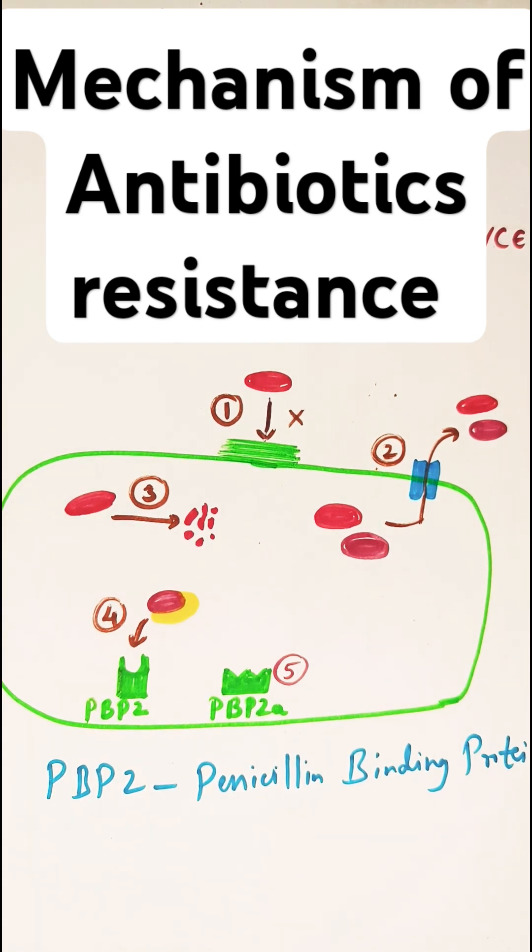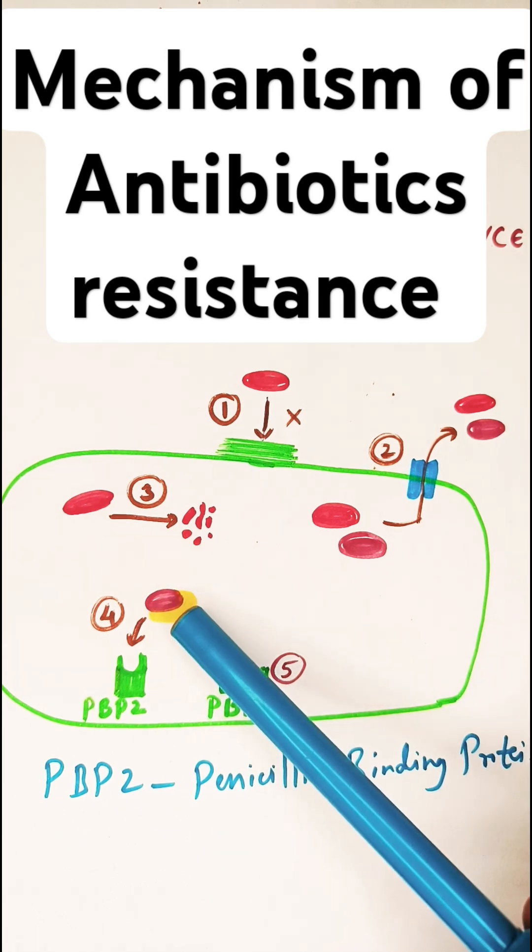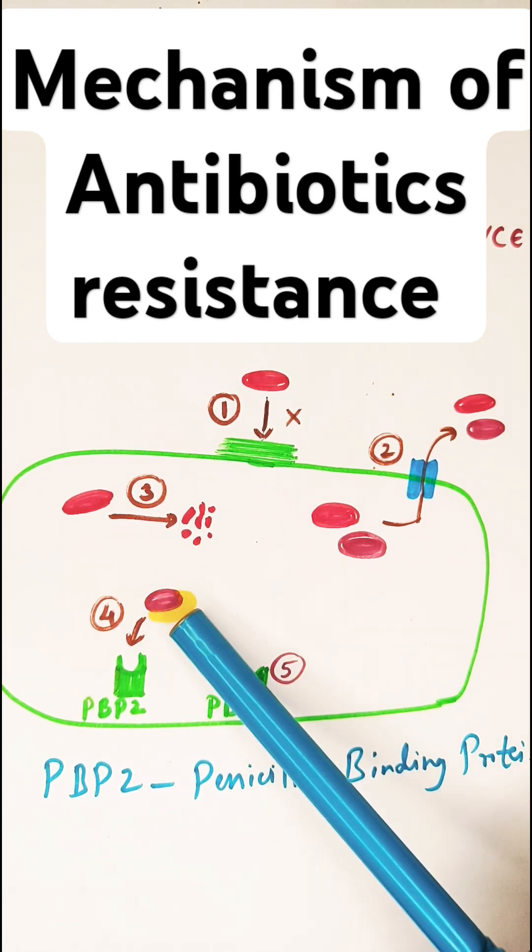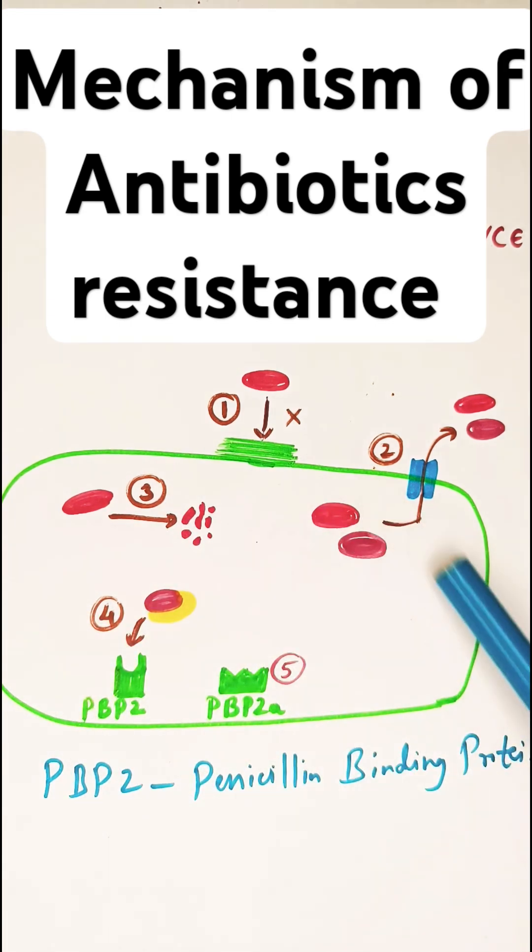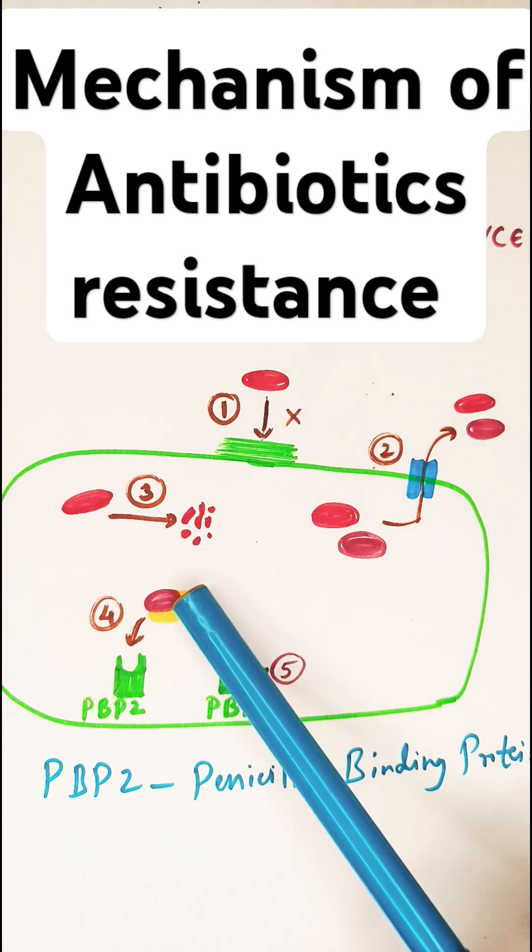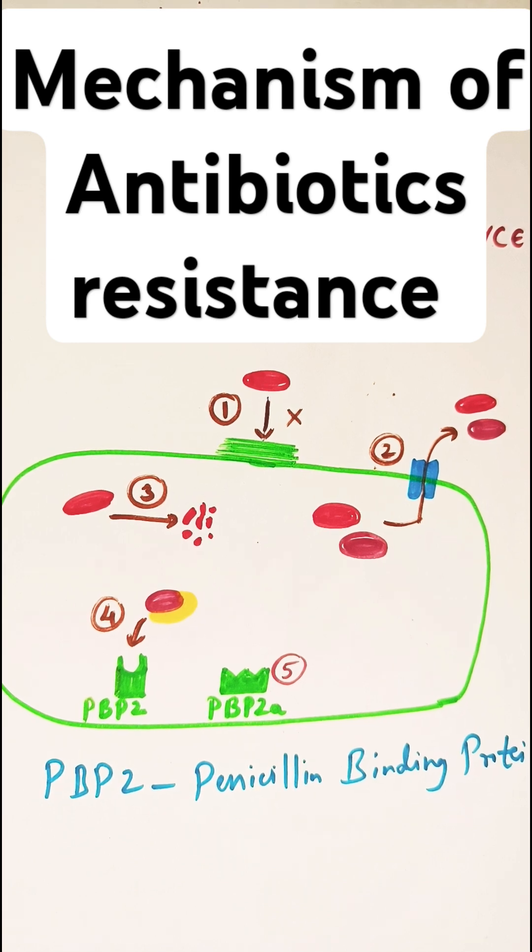The fourth mechanism - if you see here, some proteins will be produced. I hope you're able to see this yellow color. The bacteria starts producing proteins that will go and bind with the antibiotics. Now this protein and antibiotic combination will not be able to bind to the target site.